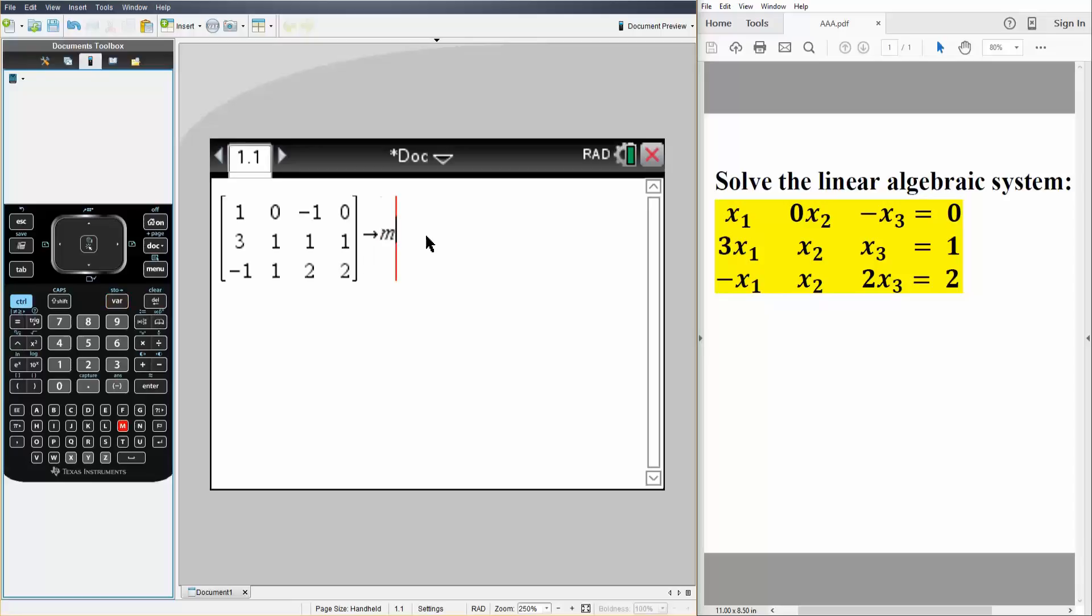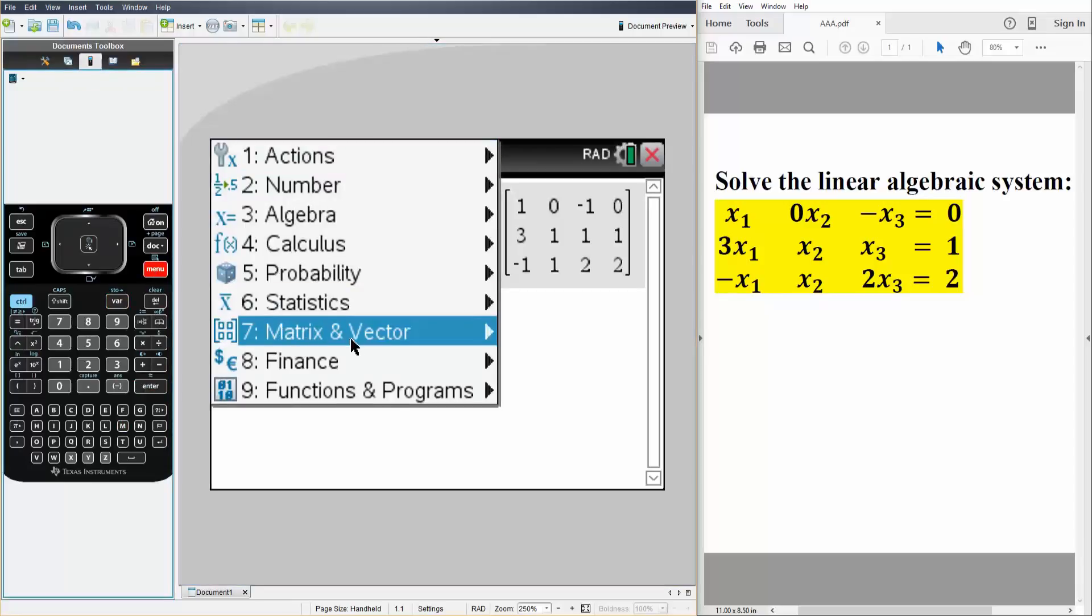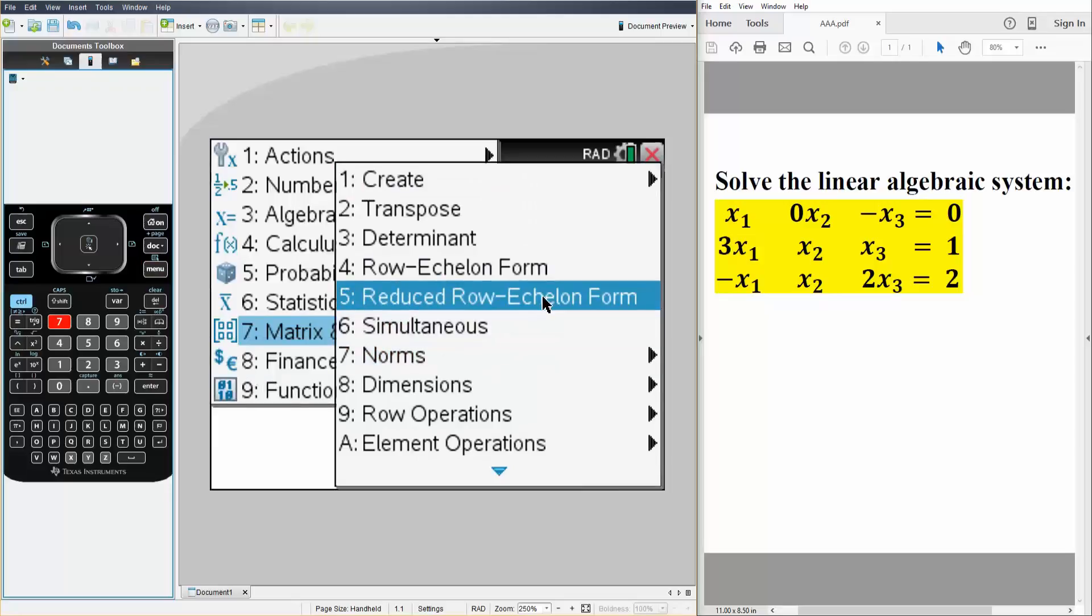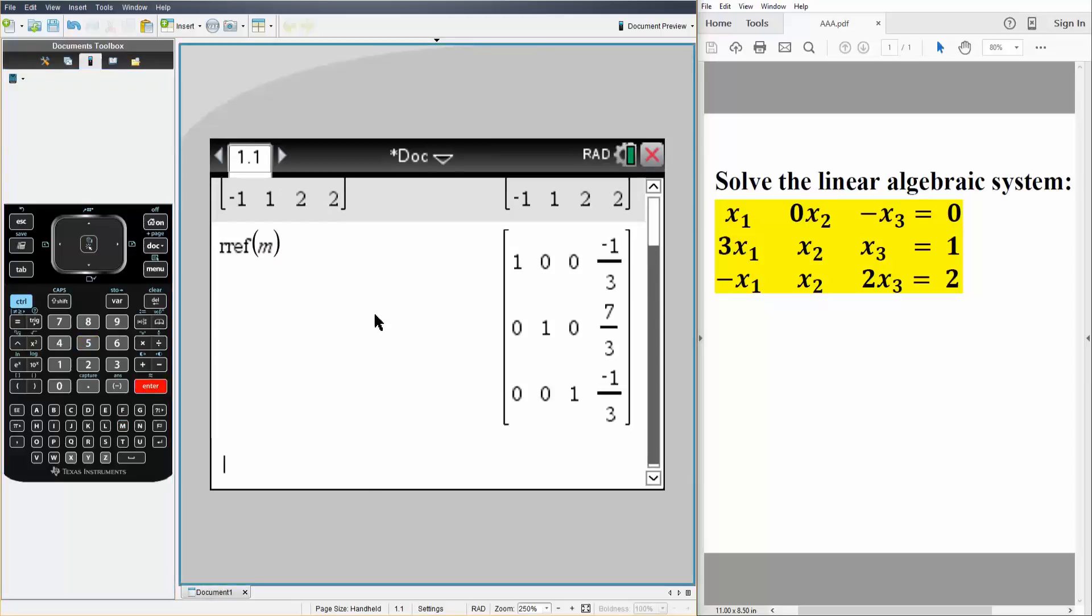And so now we'll go to menu 7 for matrix and vector, and then we'll go to 5, reduced row echelon form. So 5, and now we will just simply say M, hit enter.